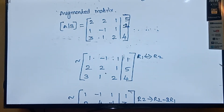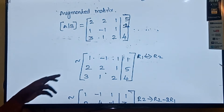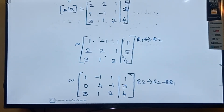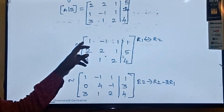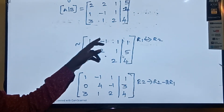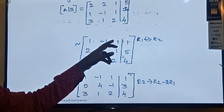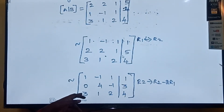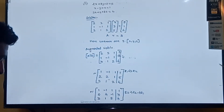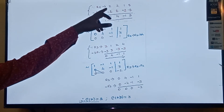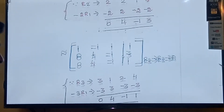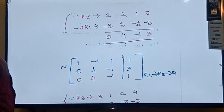After that, the second row first element must be 0. But here R2 first element is 2, so I am making the change using the operation R2 tends to R2 minus 2R1. R2 value is 2, 2, 1, 5; minus 2 into R1 gives minus 2, plus 2, minus 2, minus 2. Adding these: 0, 4, minus 1, 3. So R2 becomes 0, 4, minus 1, 3.